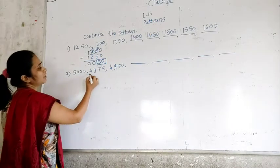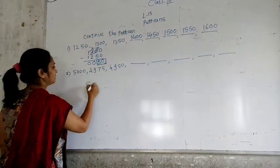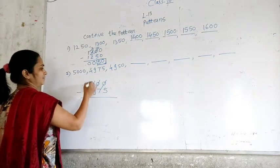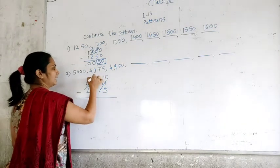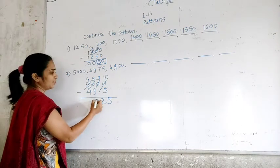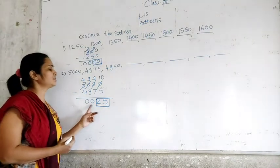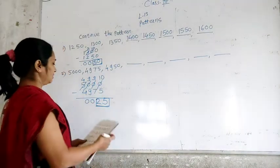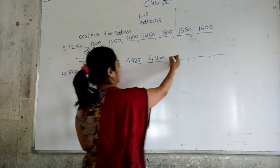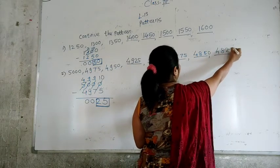The next pattern is 5000, 4975, 4950. Calculate the difference: 5000 minus 4975. Working it out: 10 minus 5 is 5, 9 minus 7 is 2, 9 minus 9 is 0, 4 minus 4 is 0 — the difference is 25. So we subtract 25 each time. The answers are 4925, 4900, 4875, 4850, and 4825.